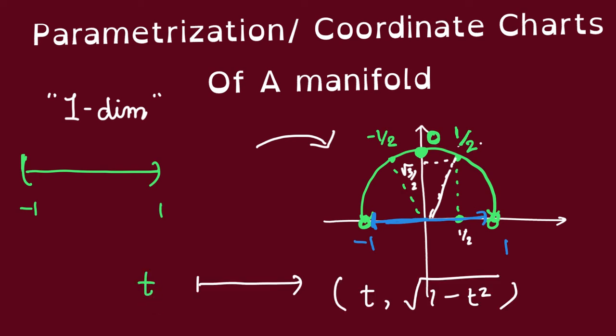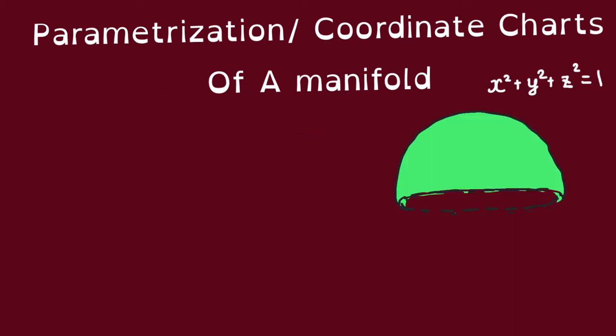In formula, this map would be t maps to t comma square root of 1 minus t square. What that means is that we want to identify each point t on this interval here upward with the point with x-coordinate t, and then the y-coordinate being equal to square root of 1 minus t square. To see that you understand, could you show me how to parametrize the upper top half of the unit sphere in R3?